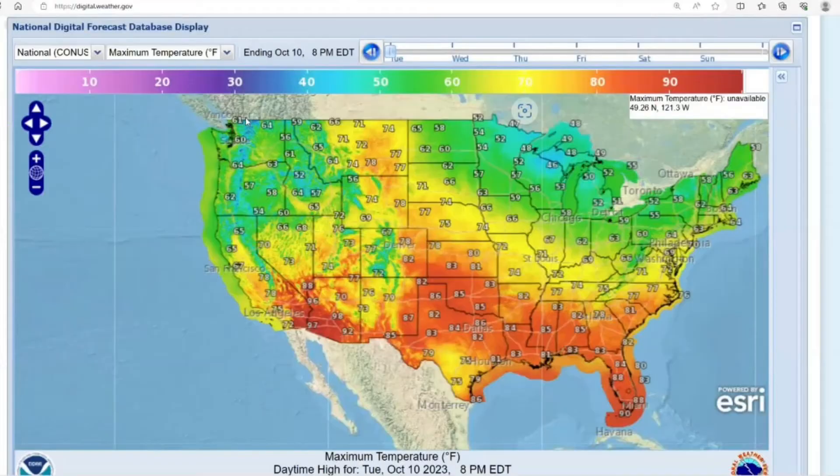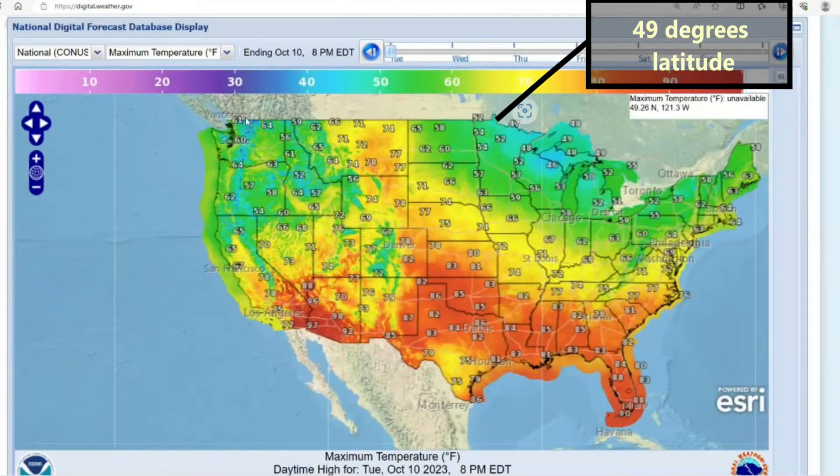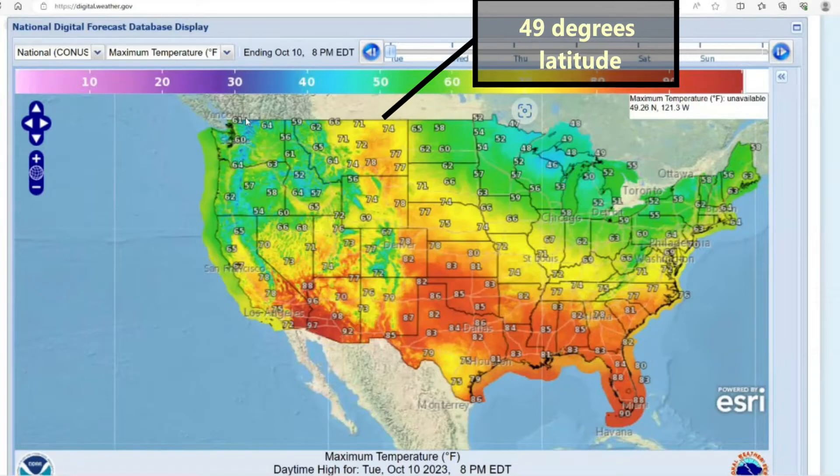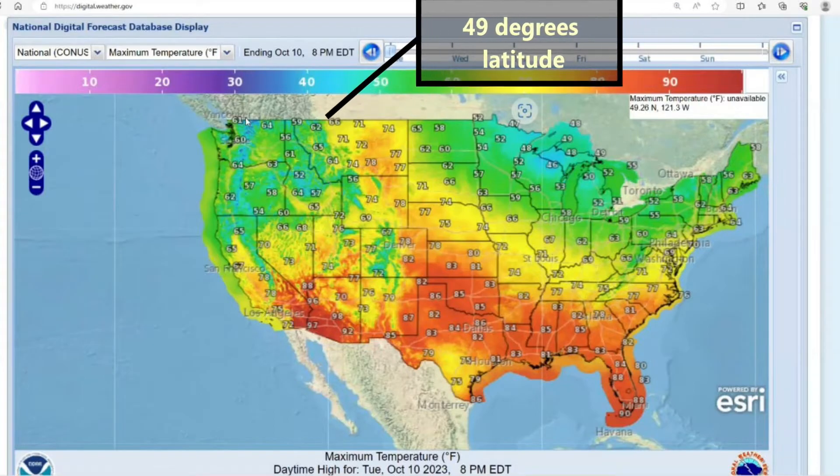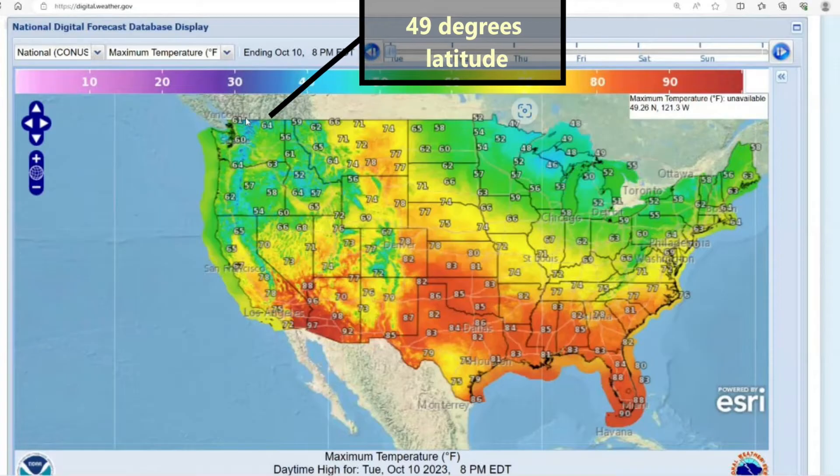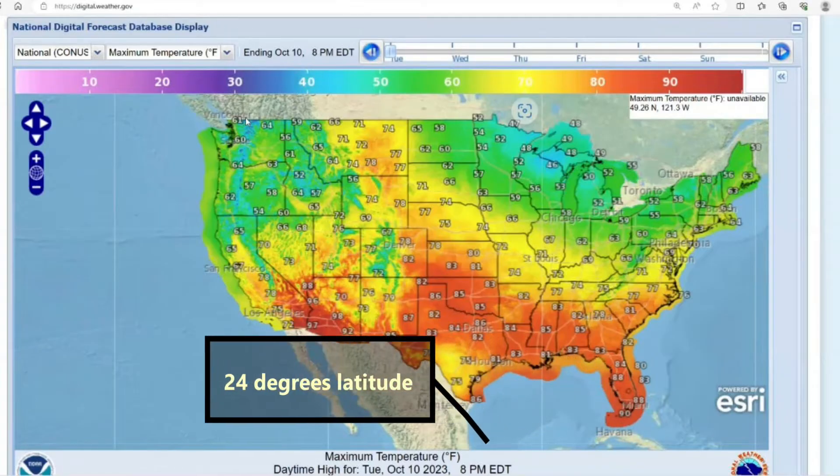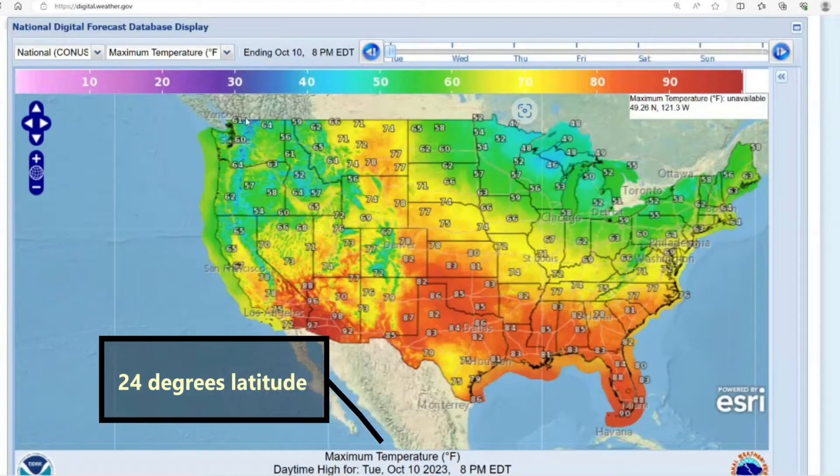We'll use this map to look at some latitude and longitude values. Part of the border between Canada and the continental US is defined as the 49th parallel, which means the 49th line of latitude. The most southern part of the continental US is at Florida's tip, which is just above the 24th line of latitude.